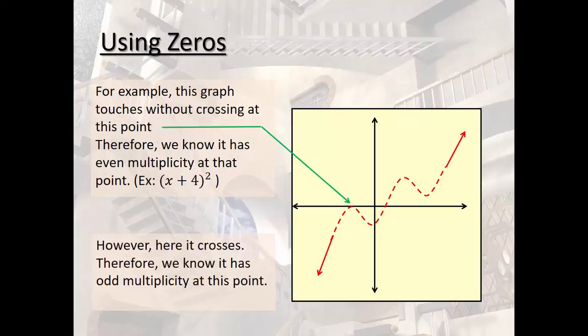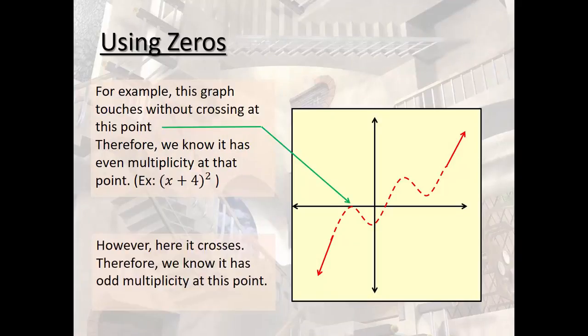Elsewhere on the graph, it crosses right there. So that, we know, has an odd multiplicity. Maybe it is x minus 2 to the 1 or x minus 2 to the 3rd.